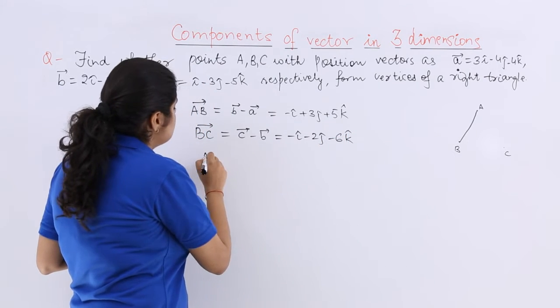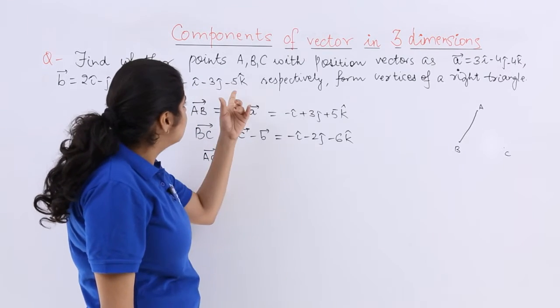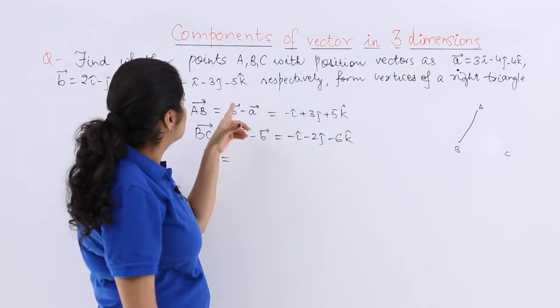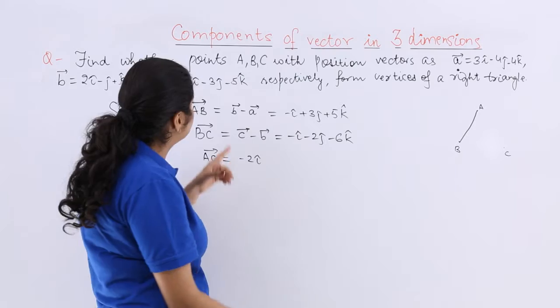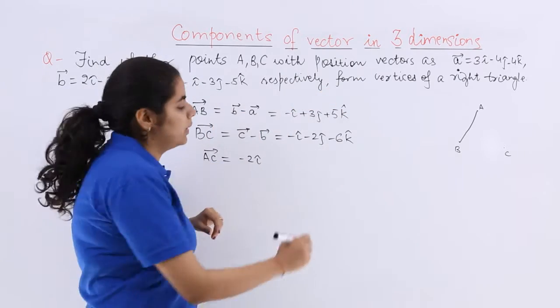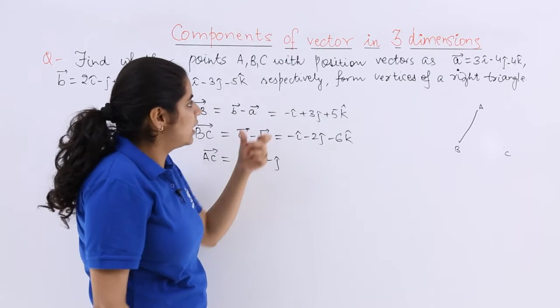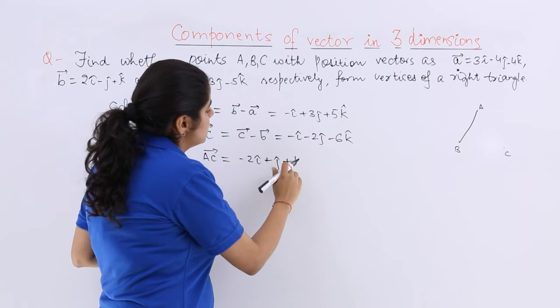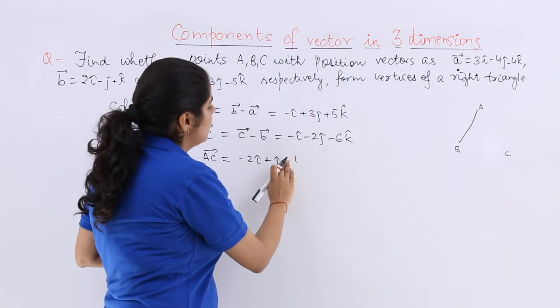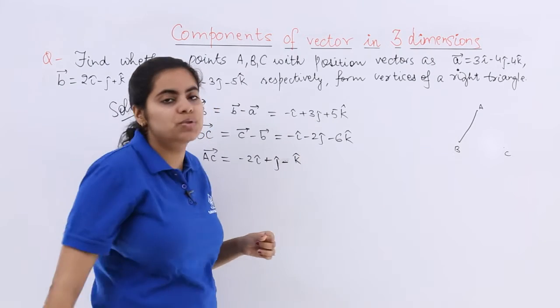What about AC vector? Now AC vector is C vector minus A vector. So C is i minus 3i which is minus 2i cap, minus 3j plus 4j. Then minus 5k plus 4k is minus k cap.